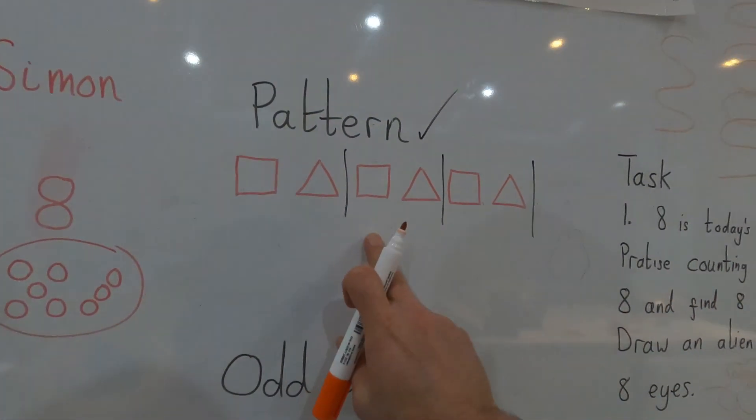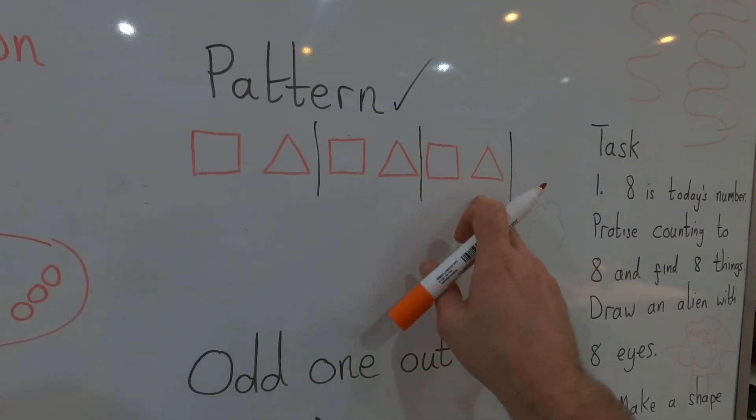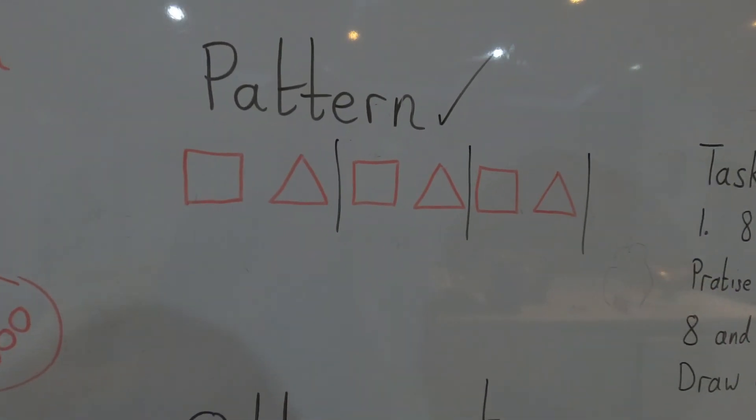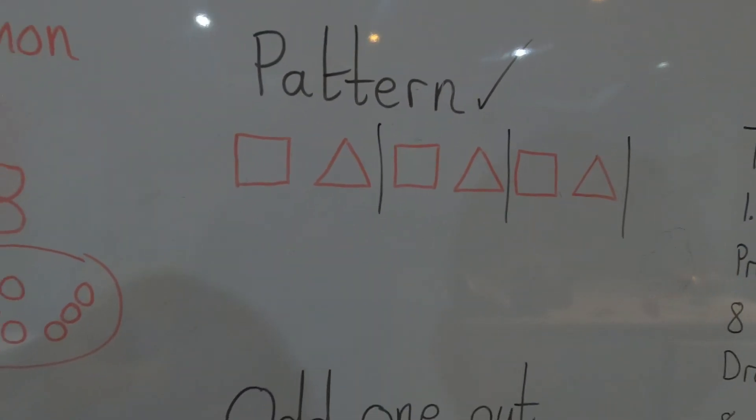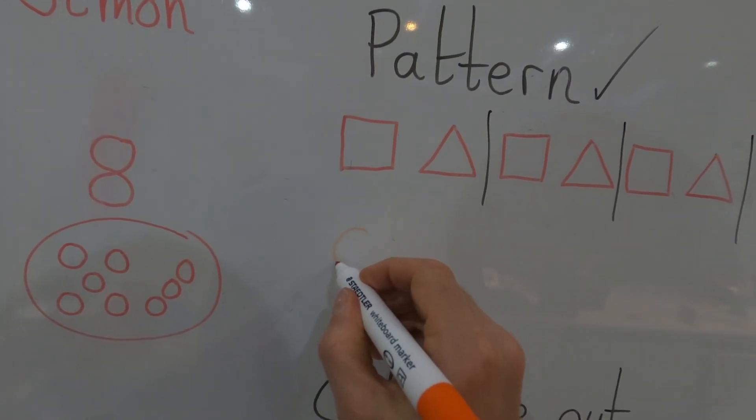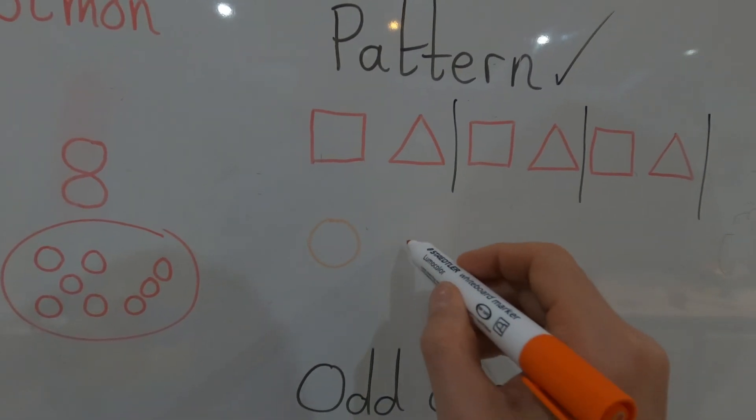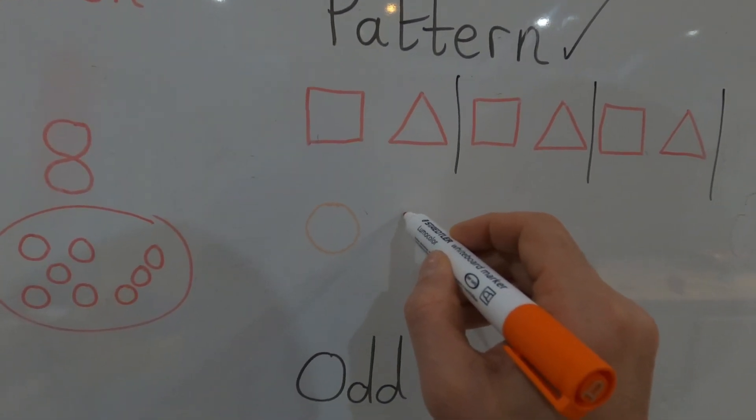Next, have a go at a shape pattern. Yesterday we did a color pattern. Can you draw a shape pattern? If you can't draw triangles because triangles are tricky, have a go. If you can't, do circles and then squares, or even lines. That is a shape, a line. Circle, line, circle, line, circle, line, there we go.